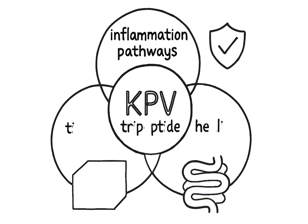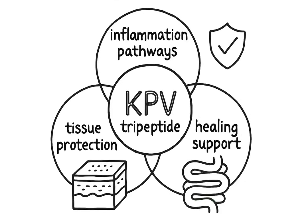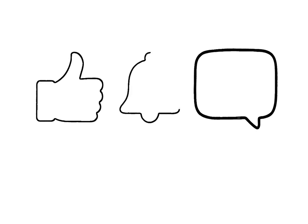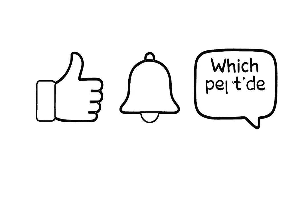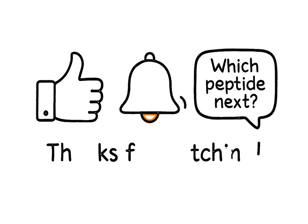So in the end, KPV is a tiny peptide with a powerful multi-level effect. By calming the body's main inflammation pathways, protecting tissues, and supporting healing, it offers gentle but meaningful support for gut health, skin repair, and immune balance. If you enjoyed this simple breakdown, make sure to like, subscribe, and comment which peptide you want explained next.